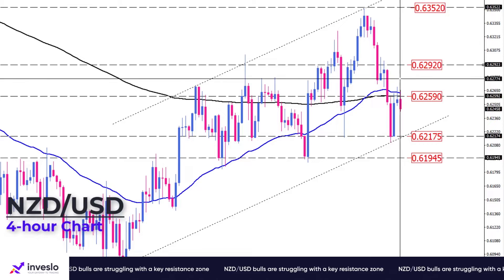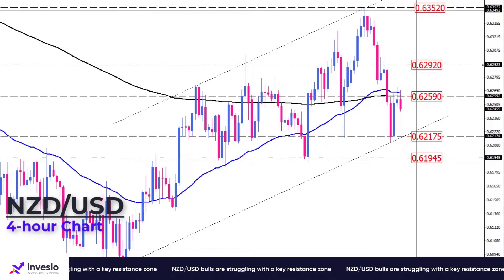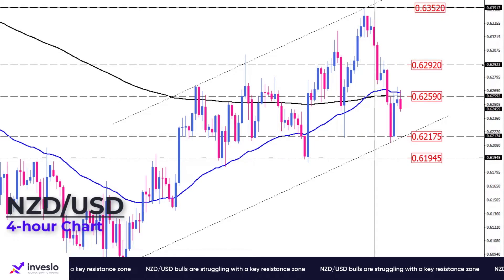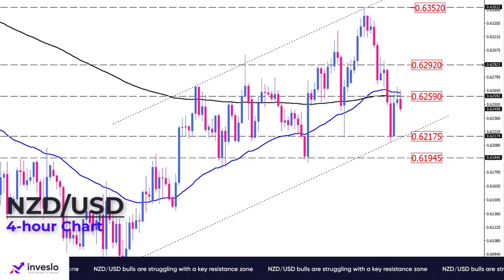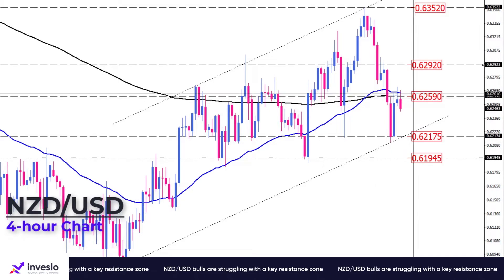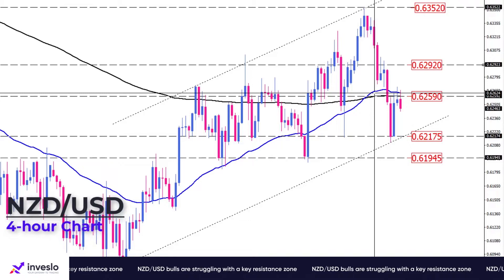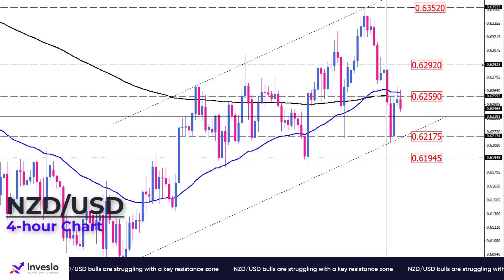And in the event that buying forces are successful in clearing this obstacle, they will be able to reclaim the six-week high of 0.63520. Alternatively, if sellers hold on to the confluence zone between the 50 and 200 period exponential moving averages, the pair might dip back to retest the channel support line near 0.62175.